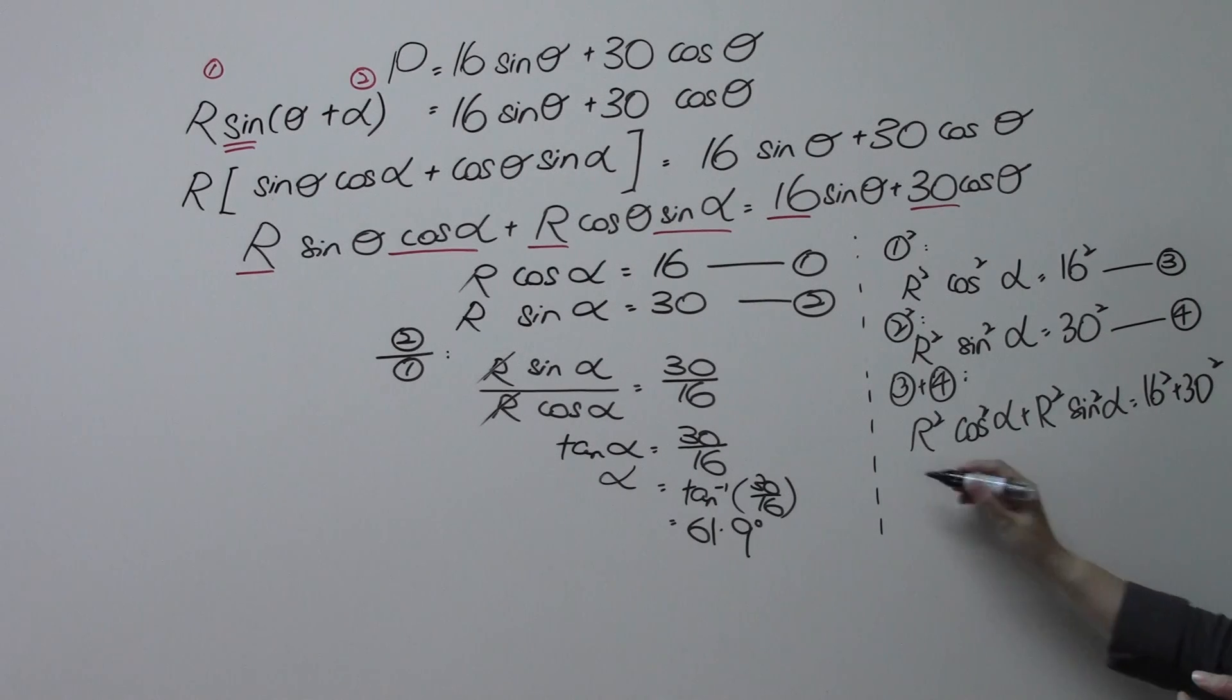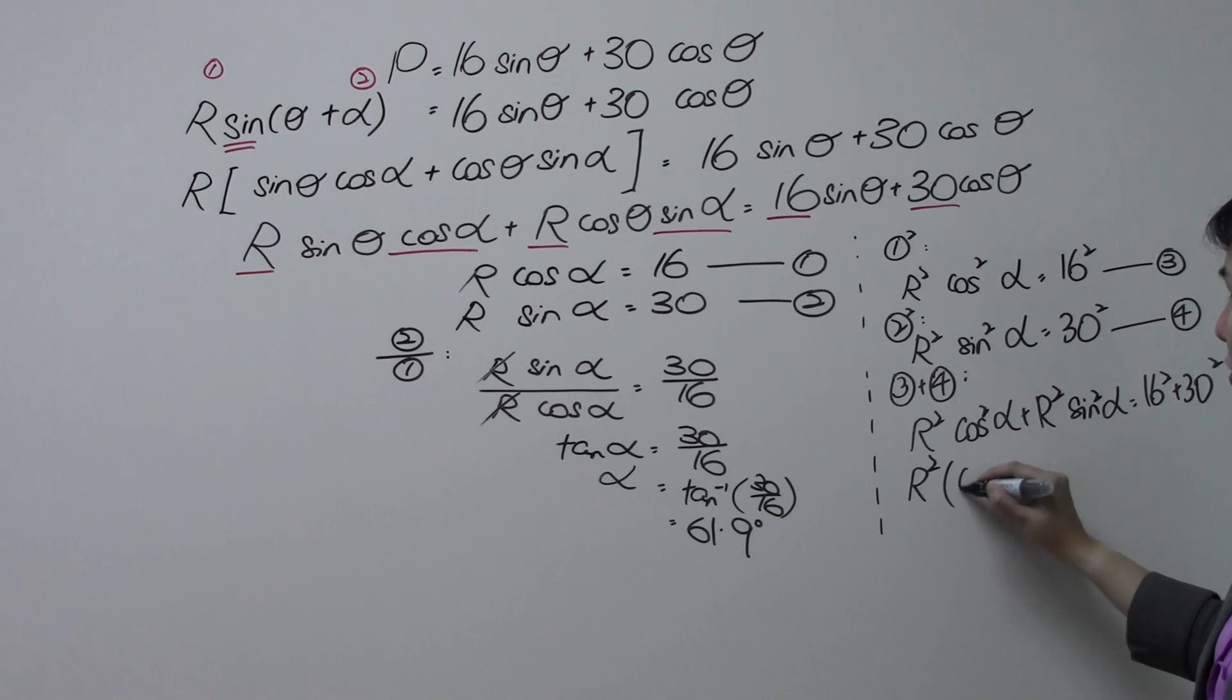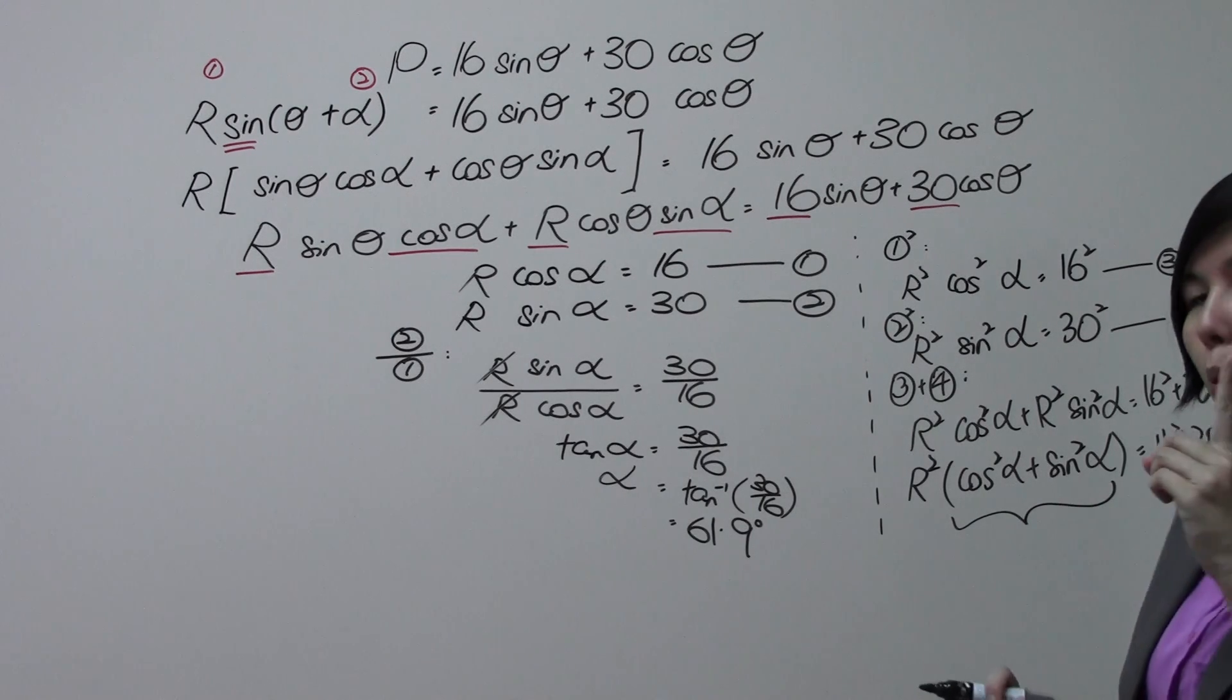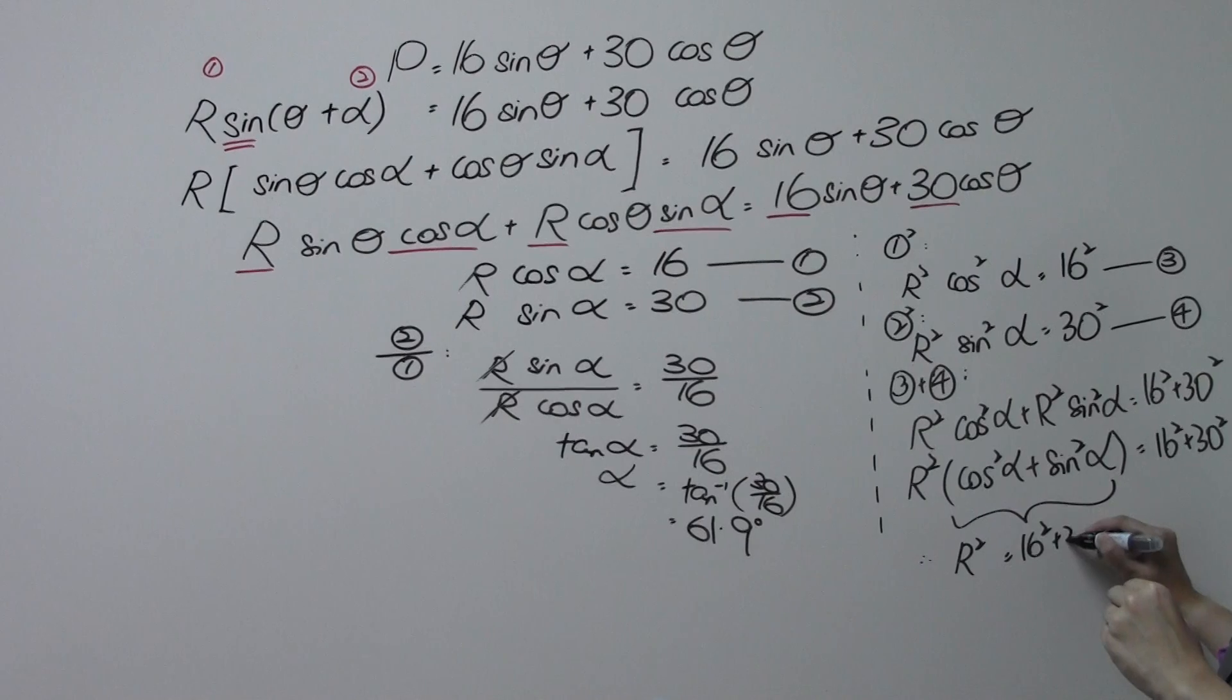Now notice we have a common term, which is R square. Factorize it out. What's left? Cosine square alpha plus sine square alpha is equals to 16 square plus 30 square. And notice this. This is actually an identity formula which gives us the value of 1. So which means to say, on the left-hand side, R square is equals to 16 square plus 30 square.